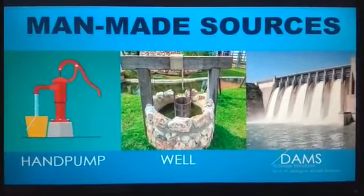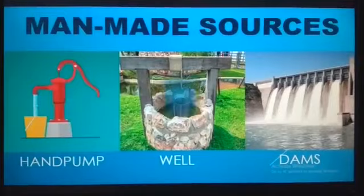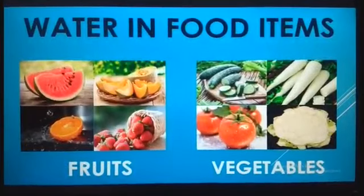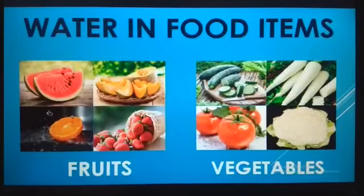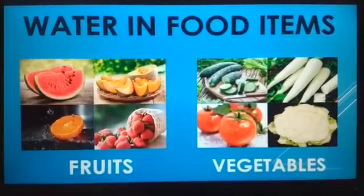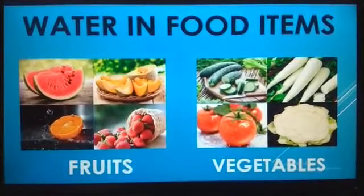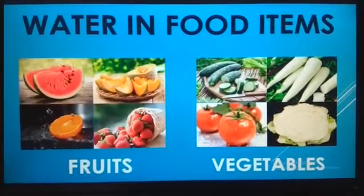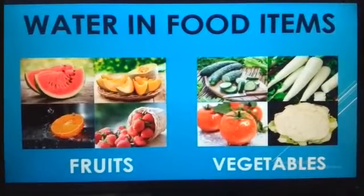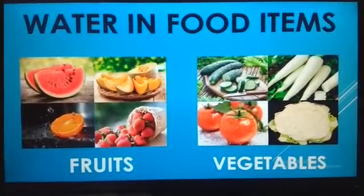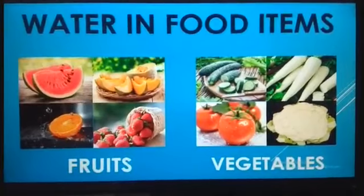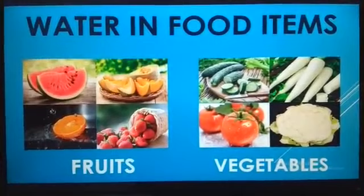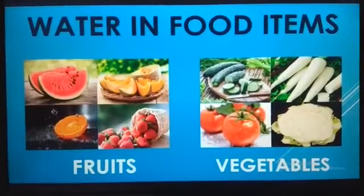Water in food items: Fruits like watermelons, melons, oranges, and strawberries have high amounts of water. Vegetables like cucumbers, radishes, tomatoes, and cauliflowers contain a lot of water. In summer season, we should take high amounts of these fruits and vegetables because they have high water content. It keeps us from dehydration.